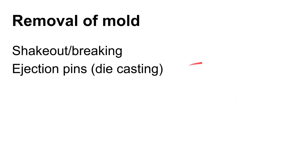Sometimes removing the casting from the mold is easier said than done. In some cases it just involves shaking the sand off if you've got a sand casting. In die casting you just open the mold and ejection pins push the casting out. In investment casting you wind up with a ceramic-like material surrounding your cast metal part that has to be shot blasted off the casting.